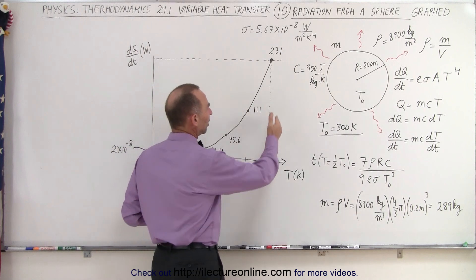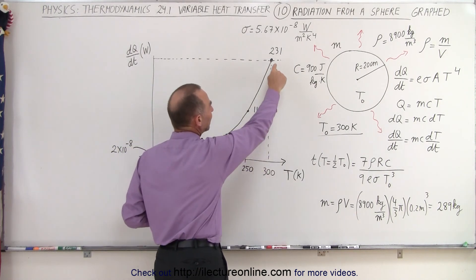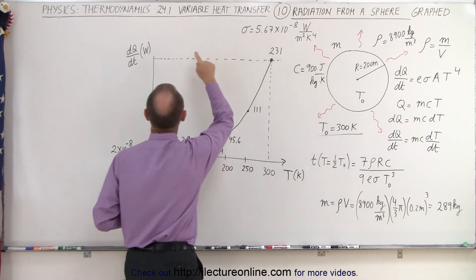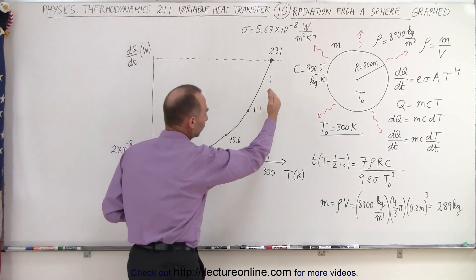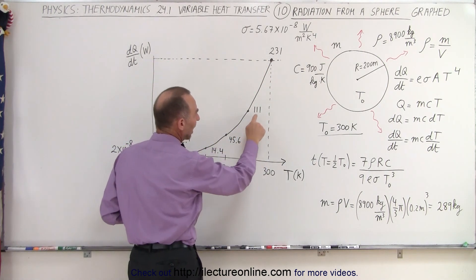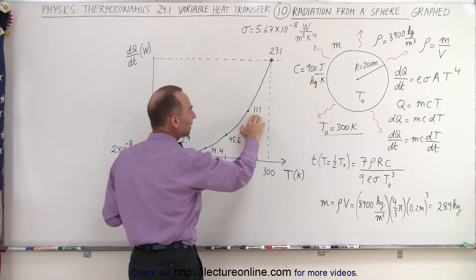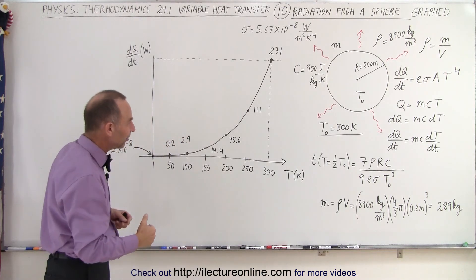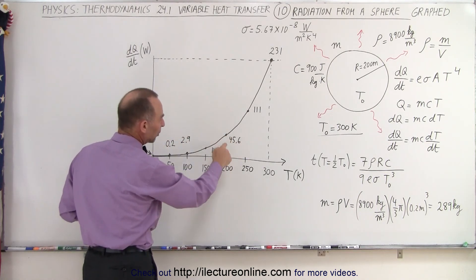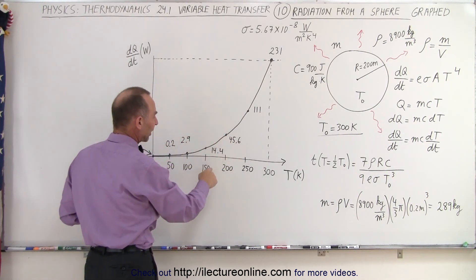And you could see that when we start out at 300 Kelvin, it would be radiating out 231 joules per second. Of course, that's equal to watts. Then when it cools down to 250 Kelvin, now the rate of putting out energy would be down to 111 watts or 111 joules per second. At 200 Kelvin, it would be down to 45 joules per second.